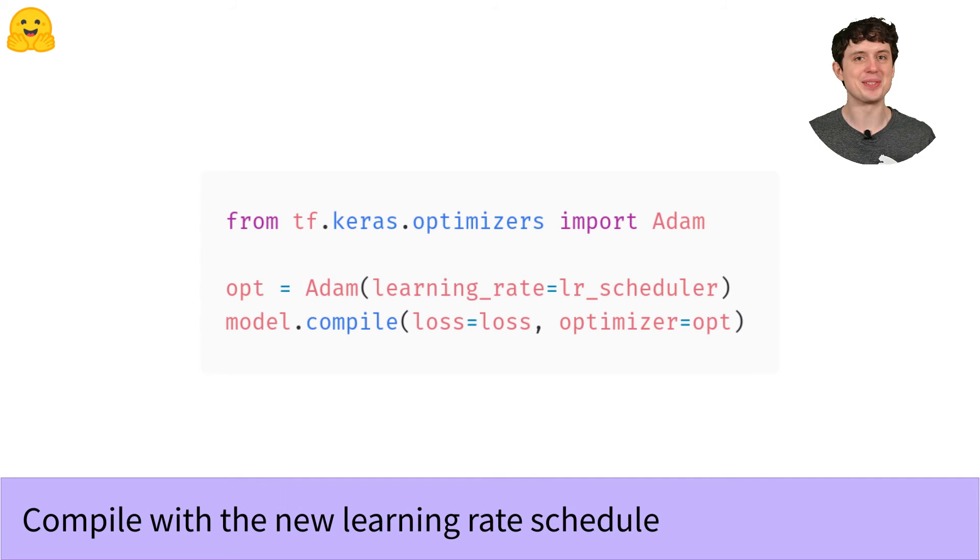So the first thing we do is we import the optimizer, then we initialize it with our scheduler in the learning_rate argument, and then we compile the model using our new optimizer and whatever loss function you want. We'll leave that unchanged. This will be sparse categorical cross-entropy if you're following along from the fine-tuning video, but it can be anything else that you're using yourself.